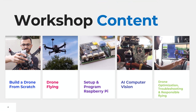So what will be covered in this workshop? First, we'll build a drone from scratch - I'll show you all of the components you need, how to put them together, and the function of each component. Next, we cover how to fly a drone safely and responsibly. Then I'll show you how to set up and program your Raspberry Pi for autonomous flight, add computer vision for gesture control, and finally we'll work through drone optimization, troubleshooting, and more responsible flying.